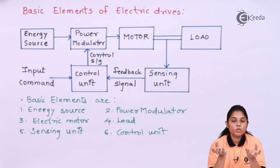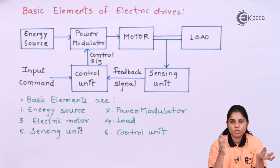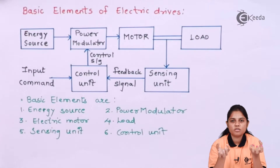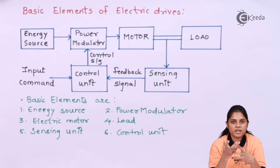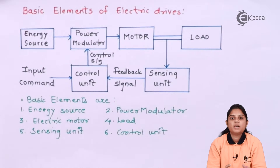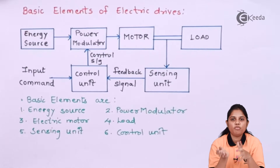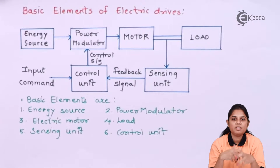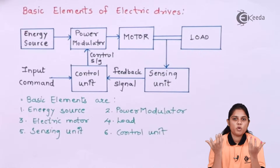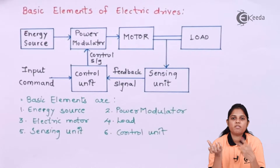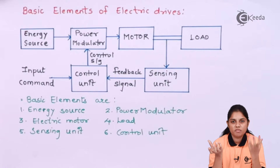You can have a conventional drive or you can have an electric drive. A conventional drive is a normal or manual drive where you have to take actions manually. But with an electric drive, the advantage is that you can handle some phenomena automatically. That is the advantage of an electric drive over a conventional drive.